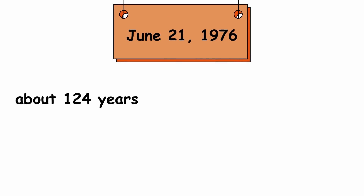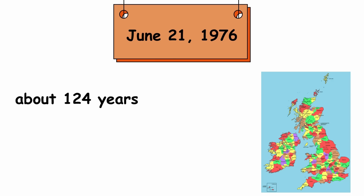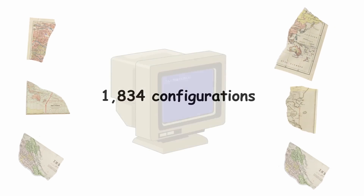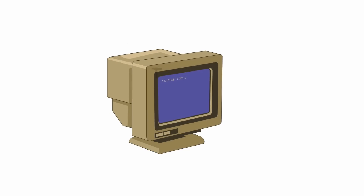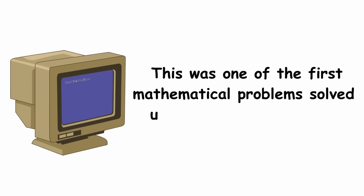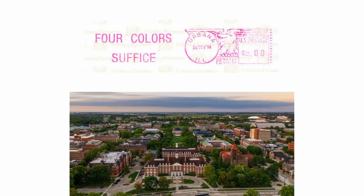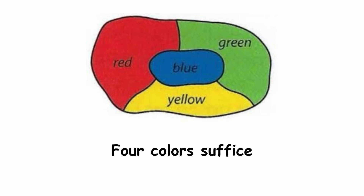As for the proof itself, it appeared on June 21st, 1976 — about 124 years after the initial proposal of the problem. The proof cannot be explained in its entirety here, mainly because part of it was just a thousand hours of computer brute-forcing. It essentially involved breaking every possible map down into 1,834 configurations and then plugging them all through a computer. This was one of the first mathematical problems solved using computers this way. When the proof was finished, news stations internationally covered it, and a postmark was created at the University of Illinois proudly proclaiming: 'Four colors suffice.'